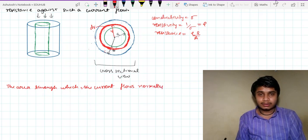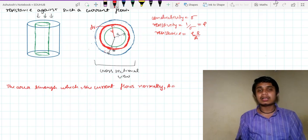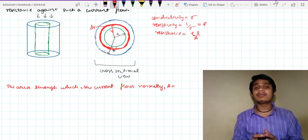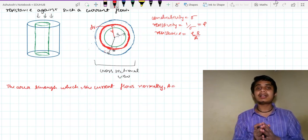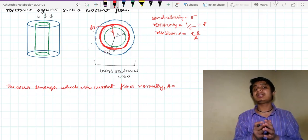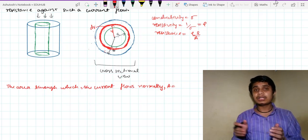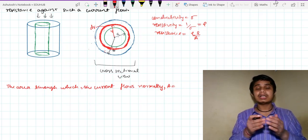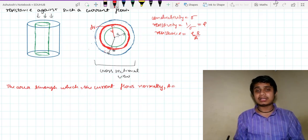Let me denote it by A. It will be the lateral surface area of this cylindrical shell. Through that area only the current is flowing, the current is diverging from the center. So it will be flowing normally through the lateral surface area of this cylindrical shell.